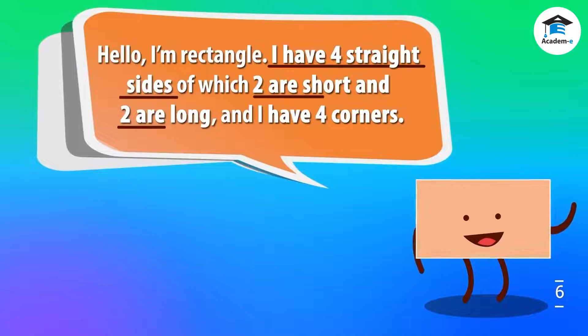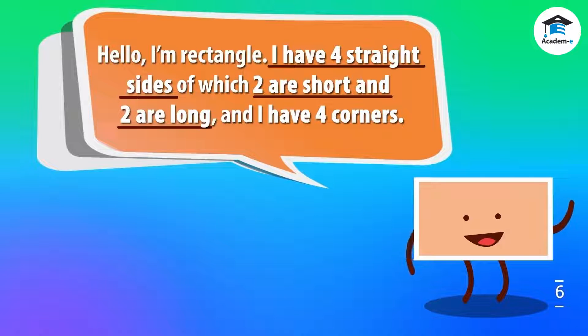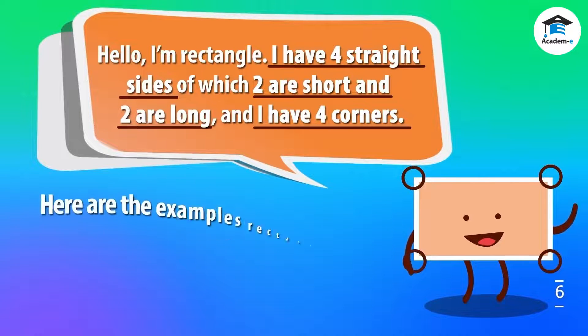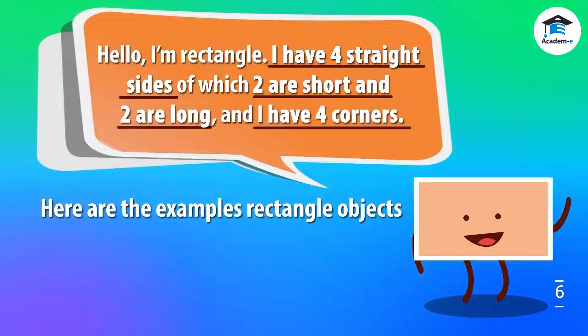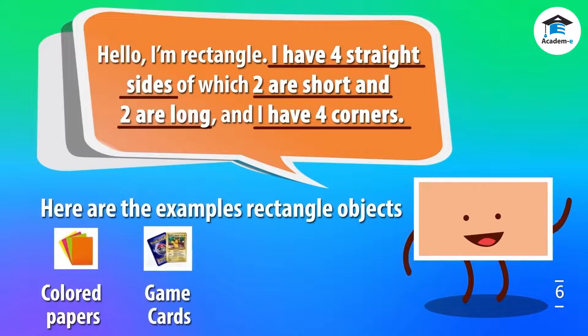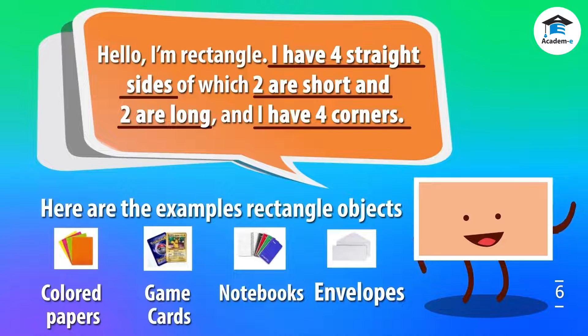Hello, I'm rectangle. I have four straight sides of which two are short and two are long, and I have four corners. Here are the examples of rectangular objects that you can see around you: we have here colored papers, game cards, notebooks, and envelopes.